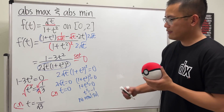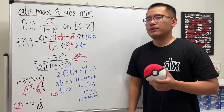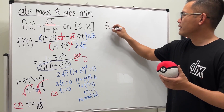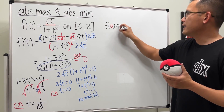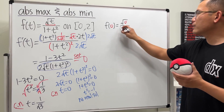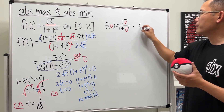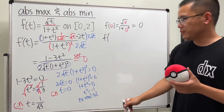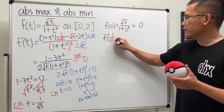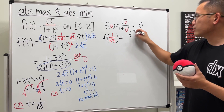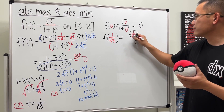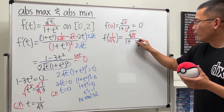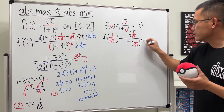We have 2 critical numbers and 2 endpoints. Checking the critical numbers: f of 0 is square root of 0 over 1 plus 0 squared, which equals 0. Next, f of 1 over square root of 3 — plugging in 1 over square root of 3, we have square root of 1 over square root of 3 on top, which simplifies since square root of square root is the fourth root, giving us 1 over the fourth root of 3. The denominator is 1 plus 1 over square root of 3 squared, which is 1 plus 1 over 3, equaling 4 over 3.